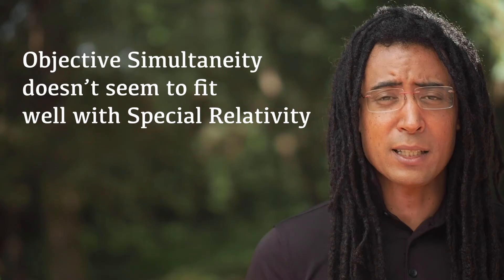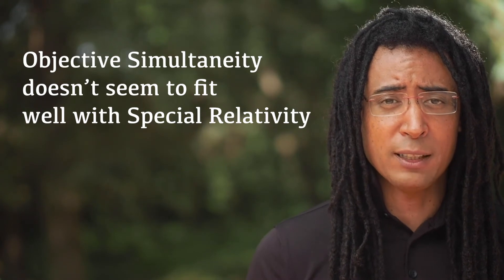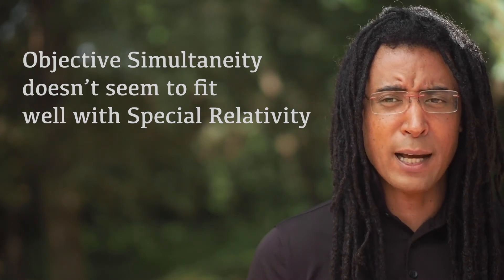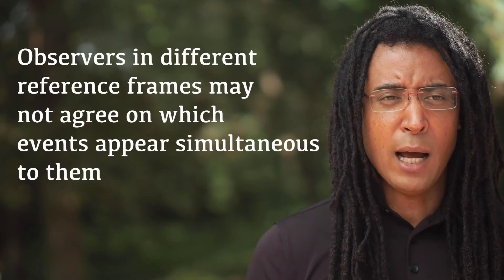Without a robust notion of simultaneity, it looks like we're not going to be able to do that. This kind of objective simultaneity doesn't fit in well with special relativity, and we're going to now turn to a thought experiment to try to see why observers, particularly in different reference frames, are not going to agree about whether or not two events are simultaneous.